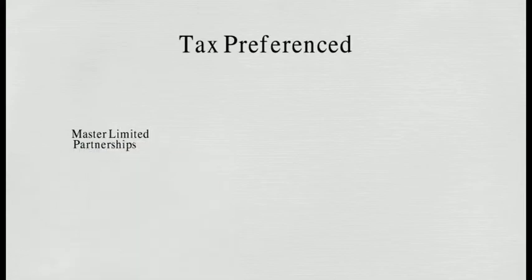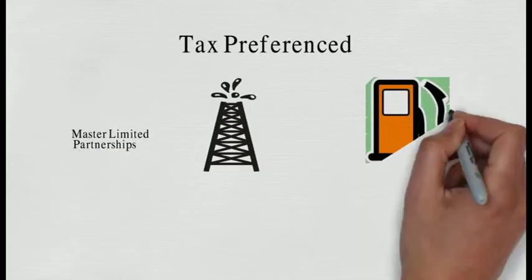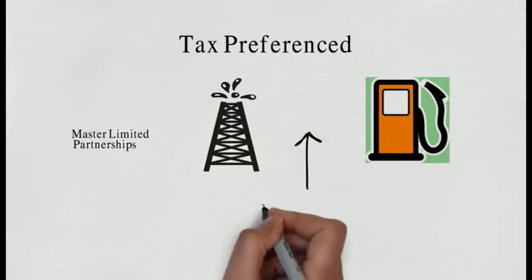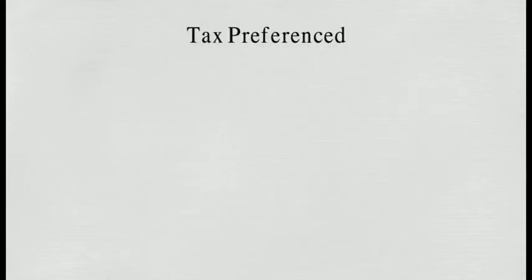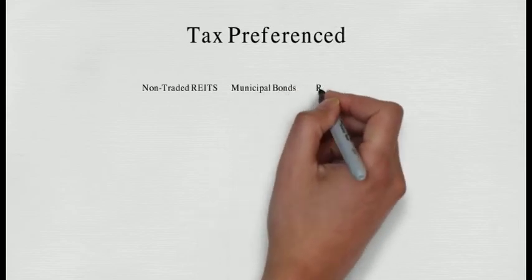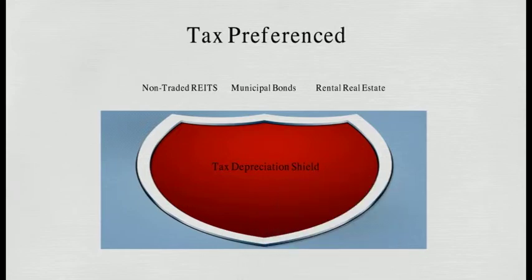Some of these tax preference investments that we discussed before are master limited partnerships, oil and gas MLPs, which have a tax deferral mechanism in themselves, non-traded REITs, municipal bonds, and rental real estate when income is offset by a tax depreciation shield.